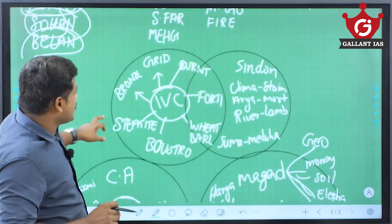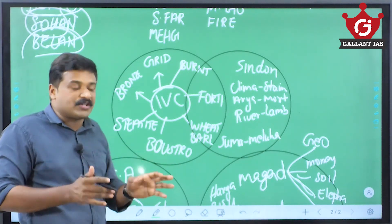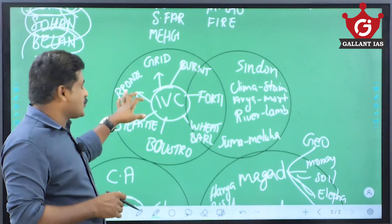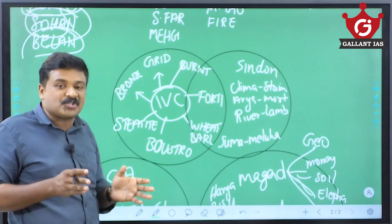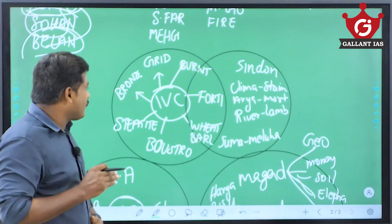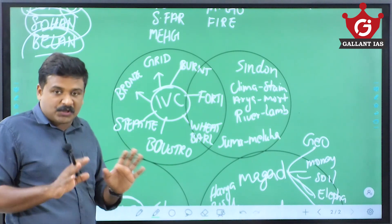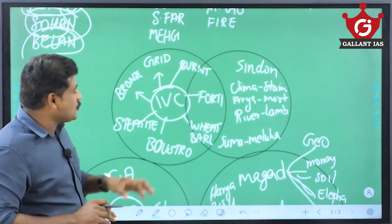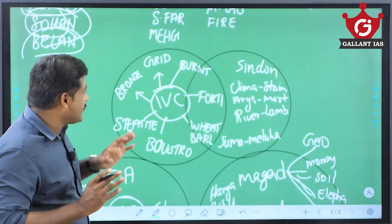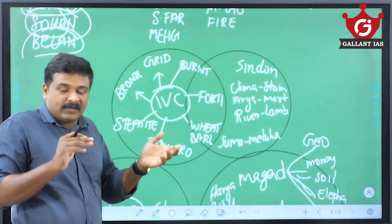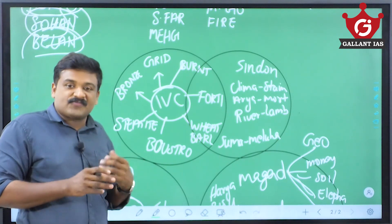Coming to IVC — some keywords to study it quickly: this is a Bronze Age civilization. They had town planning following a grid pattern, just like a chessboard. They used burned bricks extensively, unlike Mesopotamian, Greek, or Egyptian civilizations, which used them far less. These burned bricks were used for house building and constructing various structures in the cities.